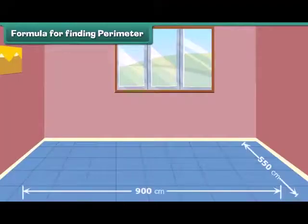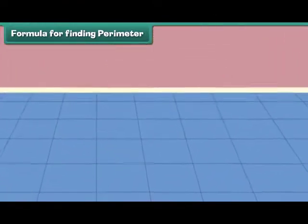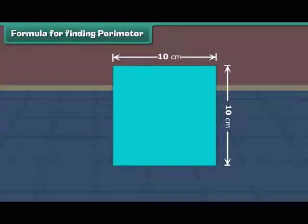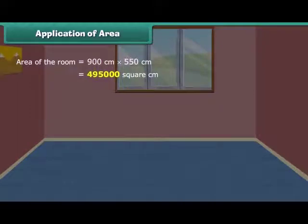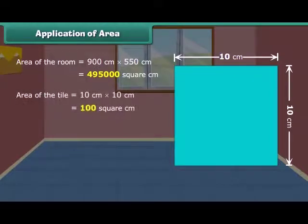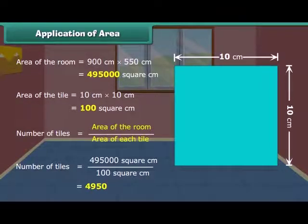This is a room of length 900 centimeters and width 550 centimeters. Rohan wants to change the tiles of the floor. If each side of the new tile is 10 centimeters, how many tiles will be needed? The area of the room is equal to length multiplied by width, which equals 4,95,000 square centimeters. The area of each tile is 10 multiplied by 10, equal to 100 square centimeters. The number of tiles needed is found by dividing the area of the room by the area of each tile, which equals 4,950 tiles.